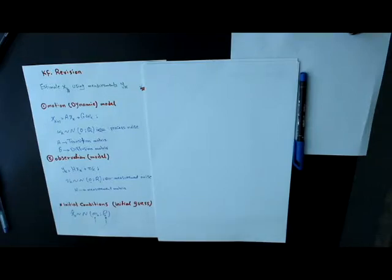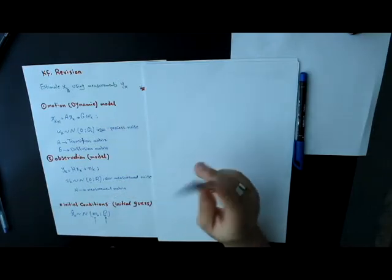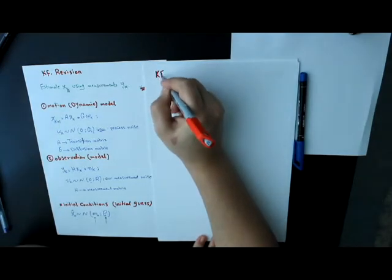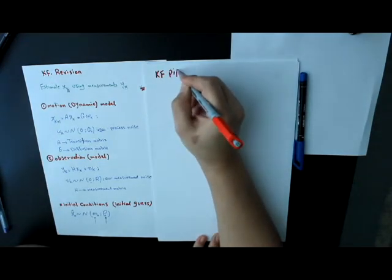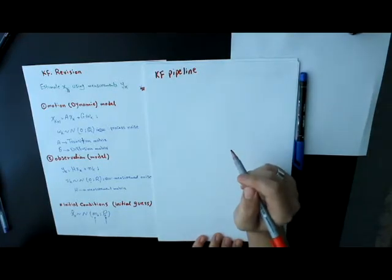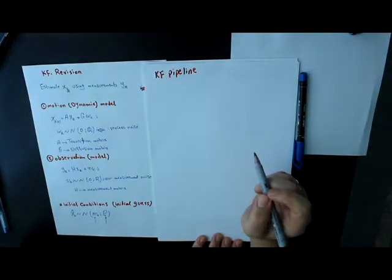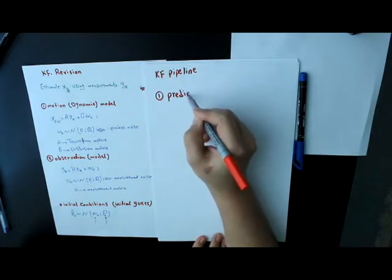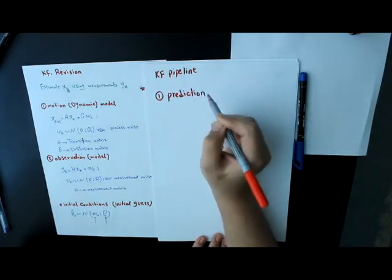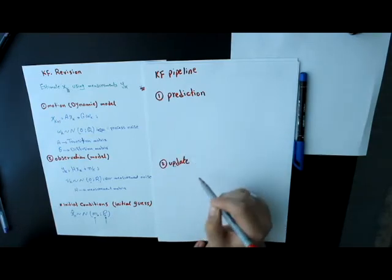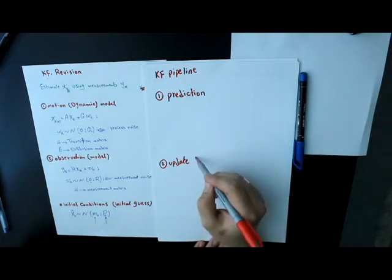In the previous video, we discussed the two models used in Kalman Filter. Now we will discuss the Kalman Filter pipeline, the algorithm itself. The Kalman Filter algorithm consists of two steps. The first step is called a prediction step, and the second step is an update step, or sometimes it's called a correction step.